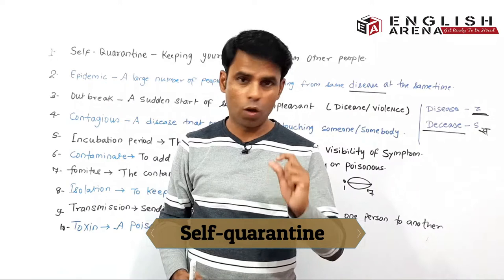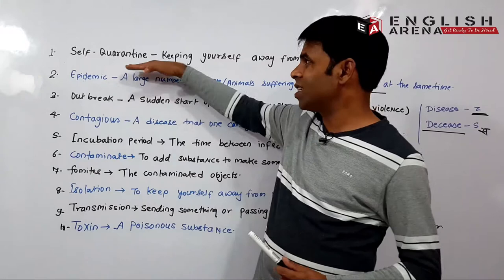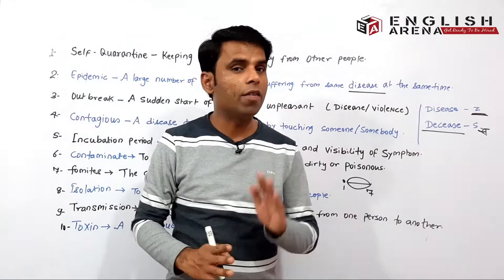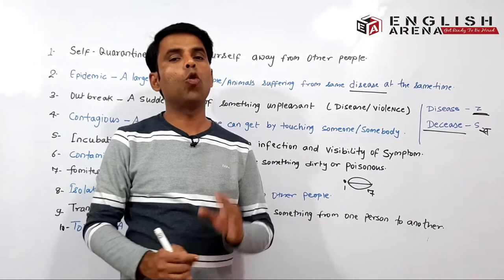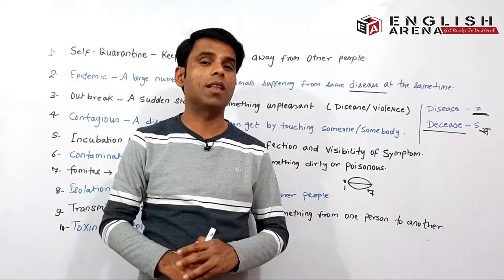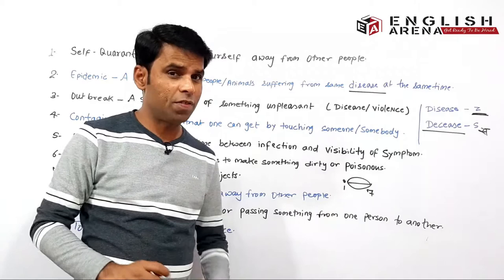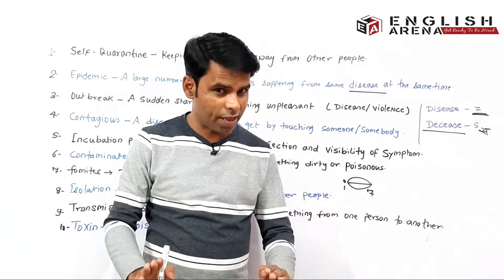'Self' ka matlab hota hai 'khud,' 'quarantine' ka matlab hota hai 'alag karna' — that means keeping yourself away from other people. Apne aapko doosron se alag karna. This is the only precaution at this point of time if you talk about corona — it is advisable to stay at home.